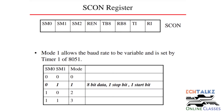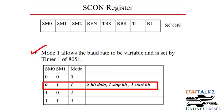The next register is the SCON register, used to set the communication mode. There are four modes: Mode 0, Mode 1, Mode 2, and Mode 3. The standard communication mode is Mode 1, which uses 8-bit data, one stop bit, and one start bit — standard framing. For simplicity, Mode 1 is explained here.